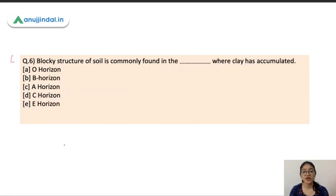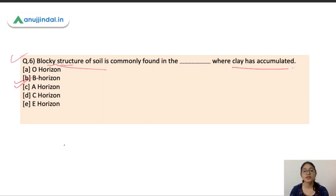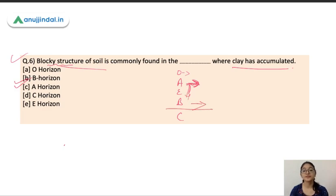The next question: blocky structure of soil is commonly found in which horizon where clay has accumulated — O, B, A, C, or E? The correct answer is B-horizon. In B-horizon you normally see blocky structures due to clay accumulation. The soil profile order is O, A, E, B, and C. A is the surface horizon with leaching of clay and organic matter, while B-horizon shows blocky structures.